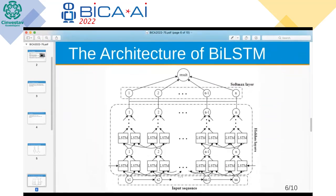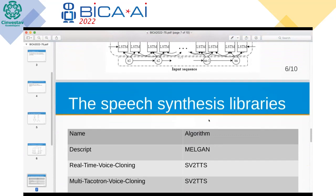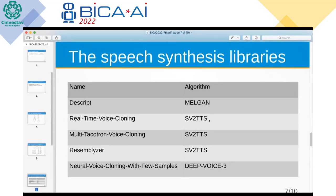The overall architecture of the network is shown here. To build such a system, it is necessary to obtain synthesized human voice samples for training the neural network. Based on this, there is a need for a dataset that uses various synthesis algorithms. The existing open voice cloning libraries were analyzed, and the five most effective ones with open-source code were selected.